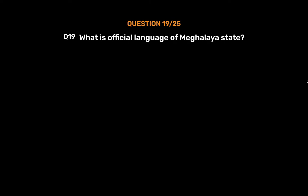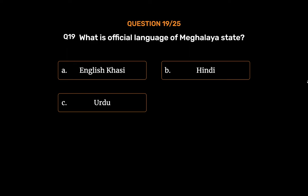Question number 19. What is the official language of Meghalaya state? Option A: English and Khasi. Option B: Hindi. Option C: Urdu. Option D: None of these.